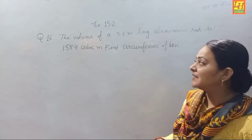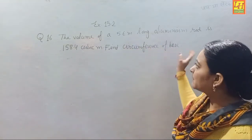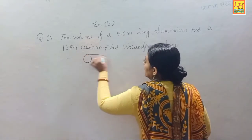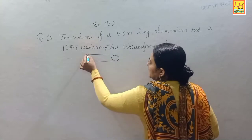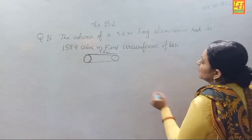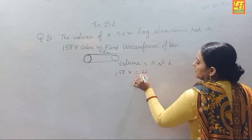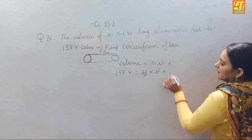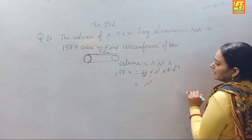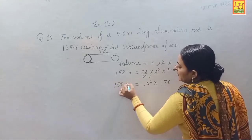Now Question Number 16: Volume of a 5.6 meter long aluminum rod is 158.4 cubic meters. Find the circumference of the base. The rod is a cylinder. Volume = πr²h. We have 158.4 = (22/7) × r² × 5.6. Rearranging: r² = 158.4 × 7 / (22 × 5.6) = 1108.8 / 123.2 = 9.